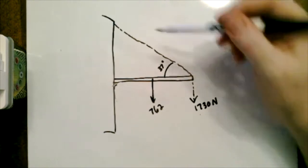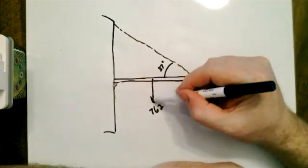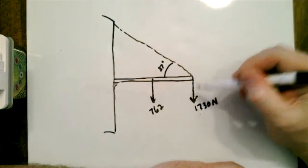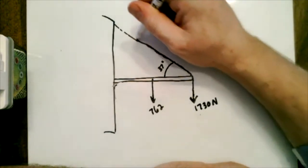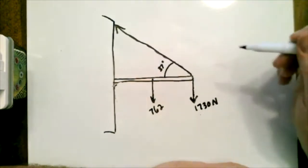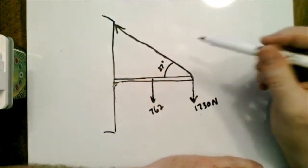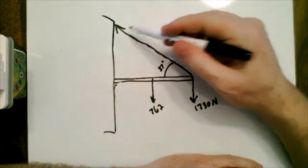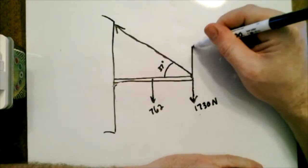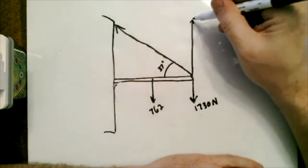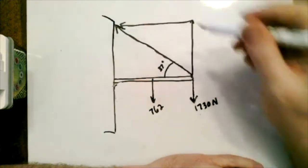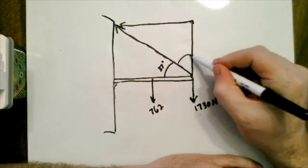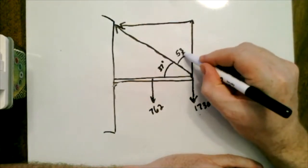The first thing you do is, we got a force going down, we got a force going down here, and the chain is actually pulling up this way on this point. So this is not up and down and left and right, so we're going to always take the chain and turn it into an up and then an over. And then we can get this angle here instead. So this is 53 degrees.